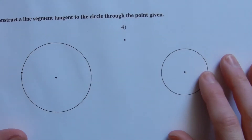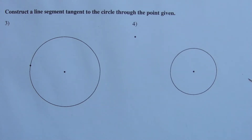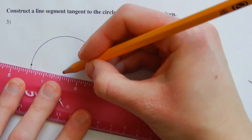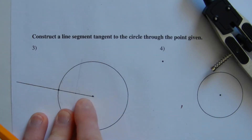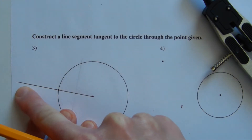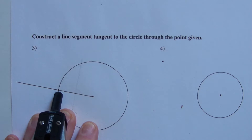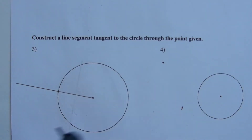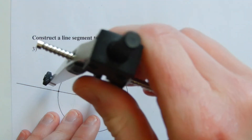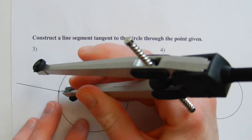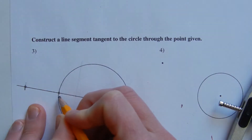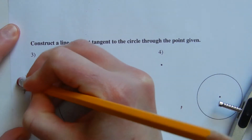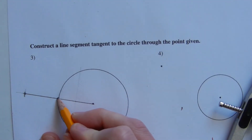Now in numbers three and four, it says to construct a line segment tangent to the circle through the given point. In order to do this, we're going to start by drawing a line that connects that point to the center of the circle, which is given. Since the given point is on the edge of the circle, I'm going to extend that line. Because it's on the edge, I know that a tangent line will intersect it perpendicularly at 90 degrees. So I'm going to find the distance from the center point to that midpoint and mark that outside my circle.